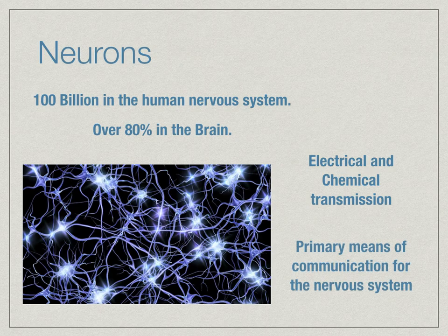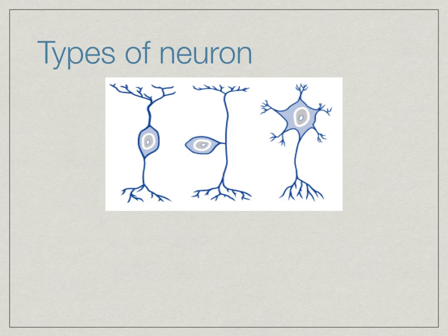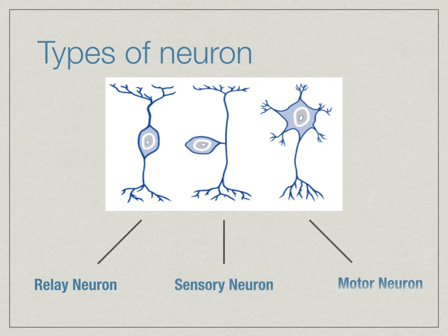Neurons are the primary means of communication within your nervous system. There are three main types of neuron: the relay neuron, the sensory neuron, and the motor neuron.